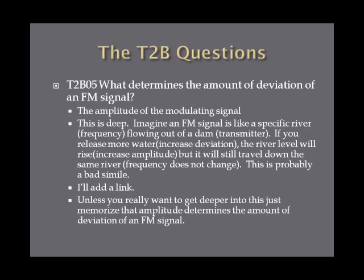Here's a way to think about it — imagine an FM signal is like a specific river, where the river is a frequency flowing out of a dam representing a transmitter. If you release more water, you're increasing deviation; the river level will rise, which increases the amplitude, while still traveling down the same river so the frequency does not change. Unless you really want to go deeper into theory, just memorize that amplitude determines the amount of deviation of an FM signal.